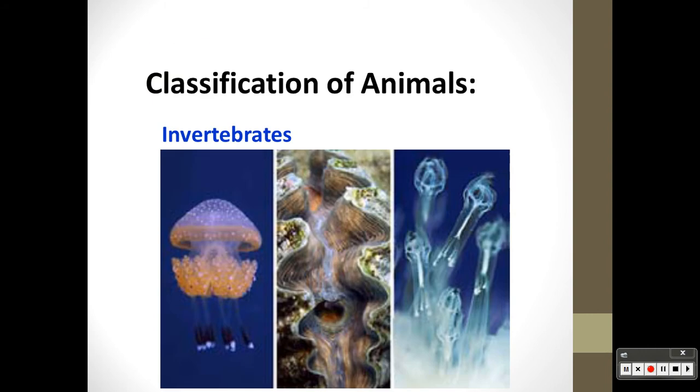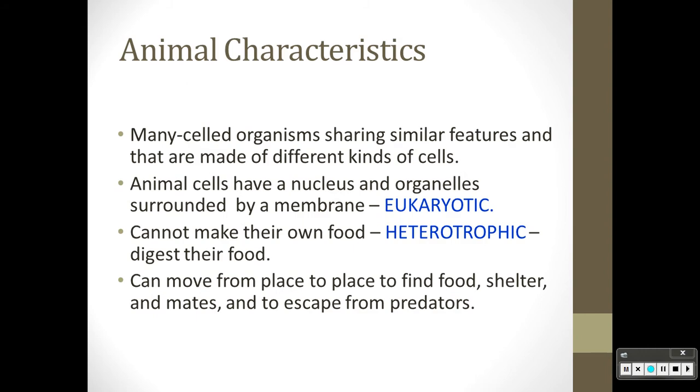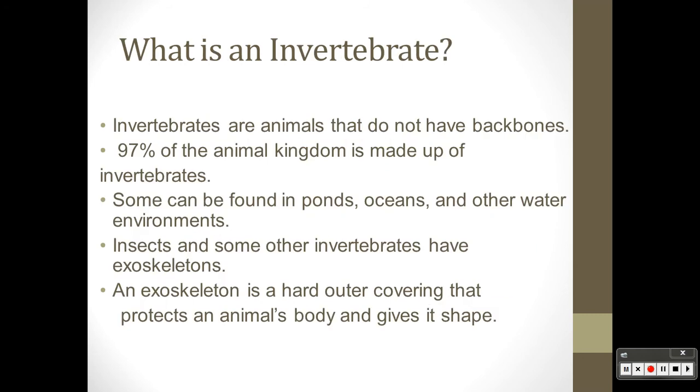Then you get to your invertebrates. Please note for Cambridge you only have to know arthropods, and in the arthropods you need insects, crustaceans, arachnids, and myriapods. You only need to know annelids, nematodes, and mollusks. Basic characteristics of invertebrates: no backbones. Most of the animals in the animal kingdom are invertebrates.